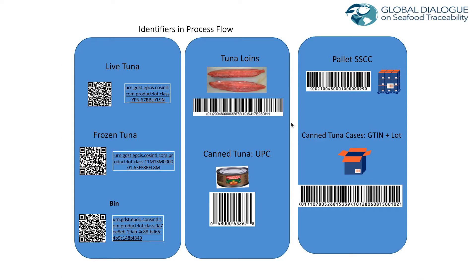Here's an example of what the identifiers were used in this pilot. After primary processing, Thai Union uses GS1 methods of logistical unit identification to track shipments, track batch lots, and to ensure traceability.